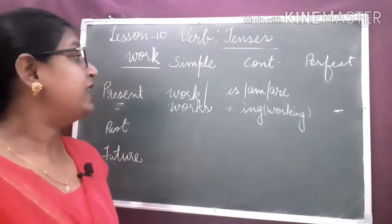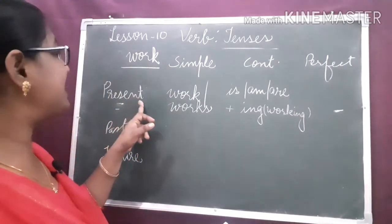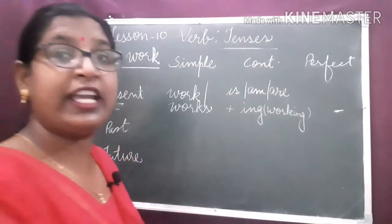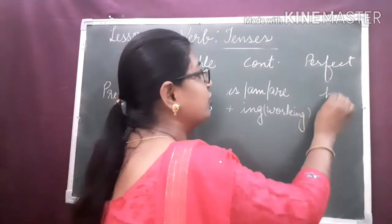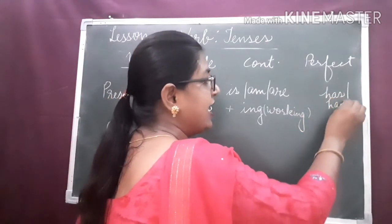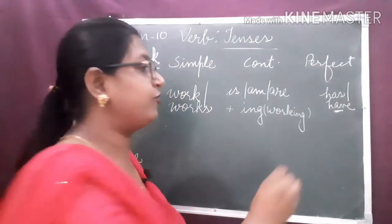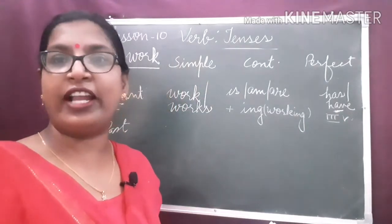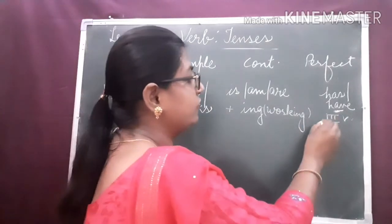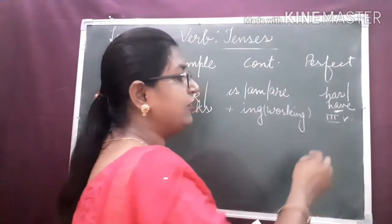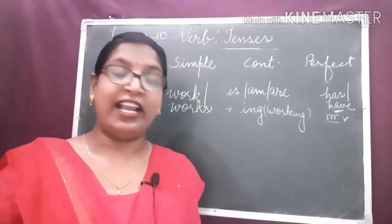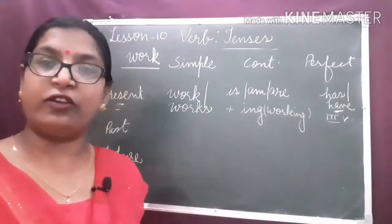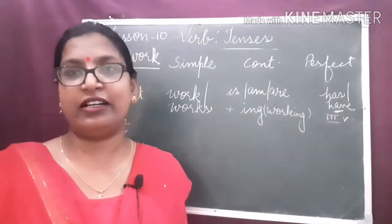In present perfect tense, we use the auxiliary verbs has or have plus the third form of the verb. It becomes 'has worked' or 'have worked.' The third form of 'work' is 'worked.' We know the different forms of the verbs — we have already studied them in the previous chapters.